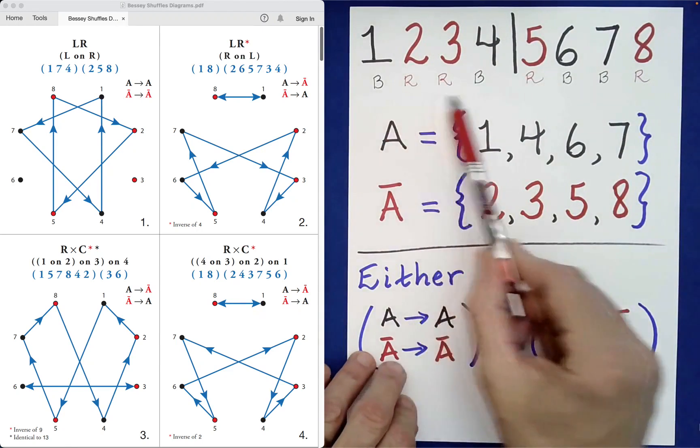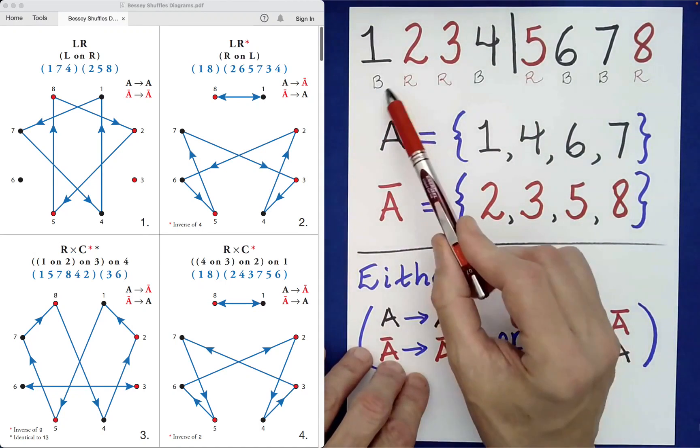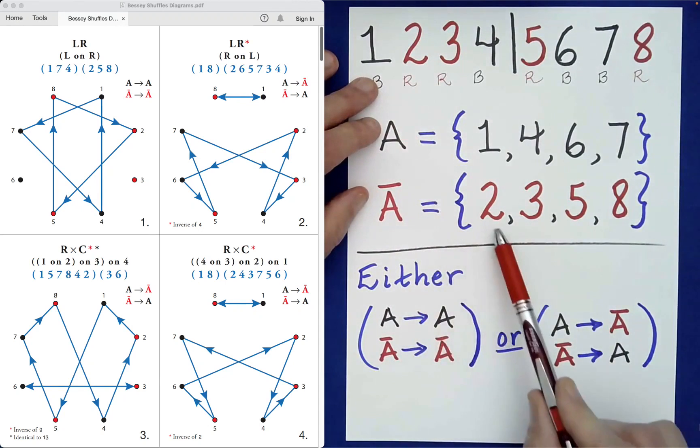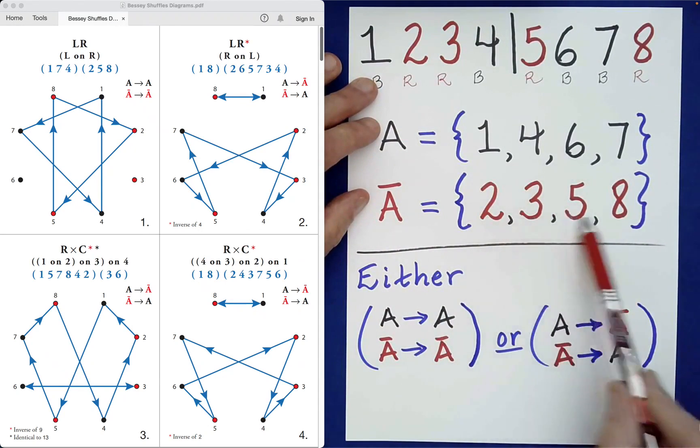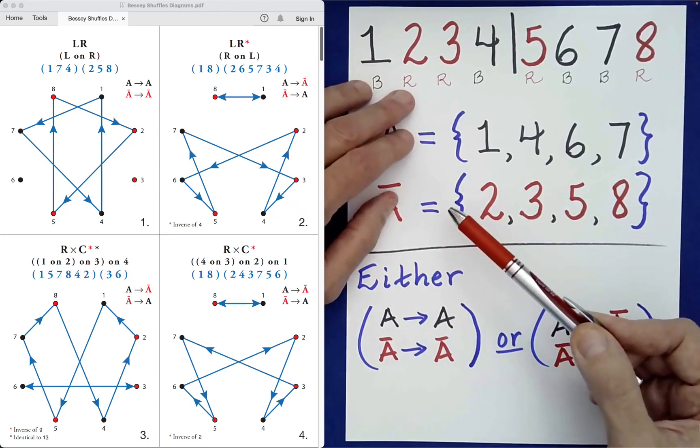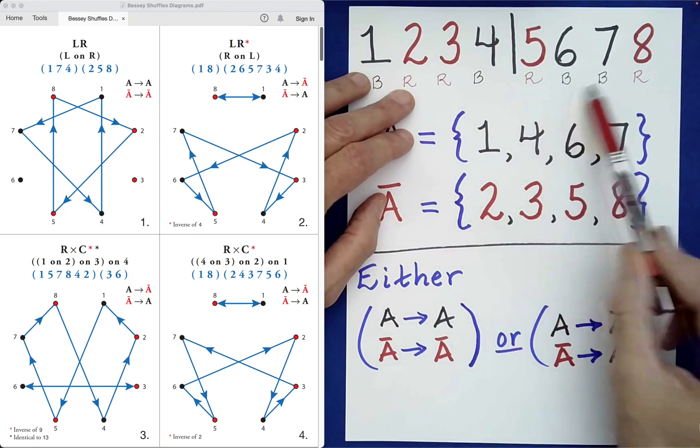For example, if the reds and blacks all switch places here, that would mean that in the first position it would now be a red card, namely one of the ones that initially started out in position 2, 3, 5, 8. The next one would be black, and then black, red, black, red, red, black.